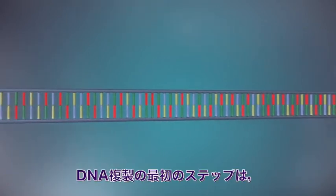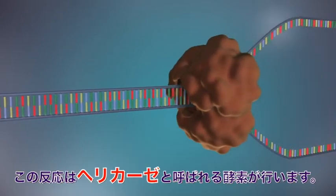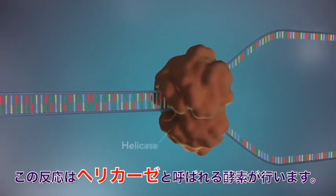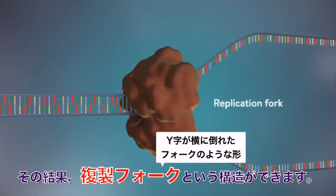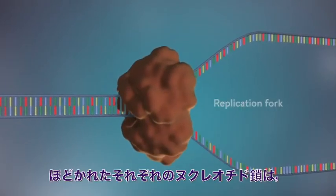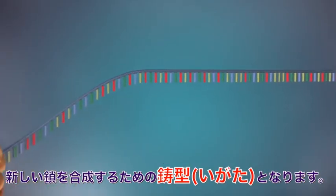The first step in DNA replication is to separate the two strands. This unzipping is done by an enzyme called helicase and results in the formation of a replication fork. The separated strands each provide a template for creating a new strand of DNA.